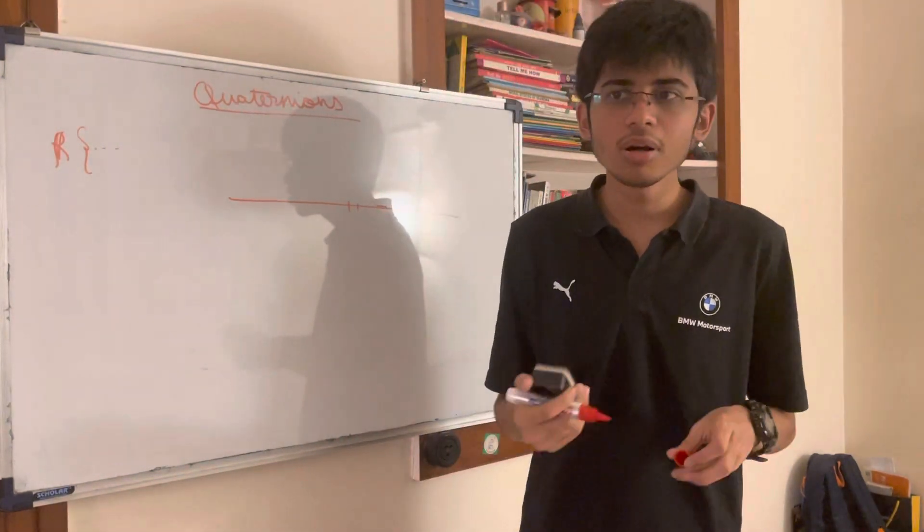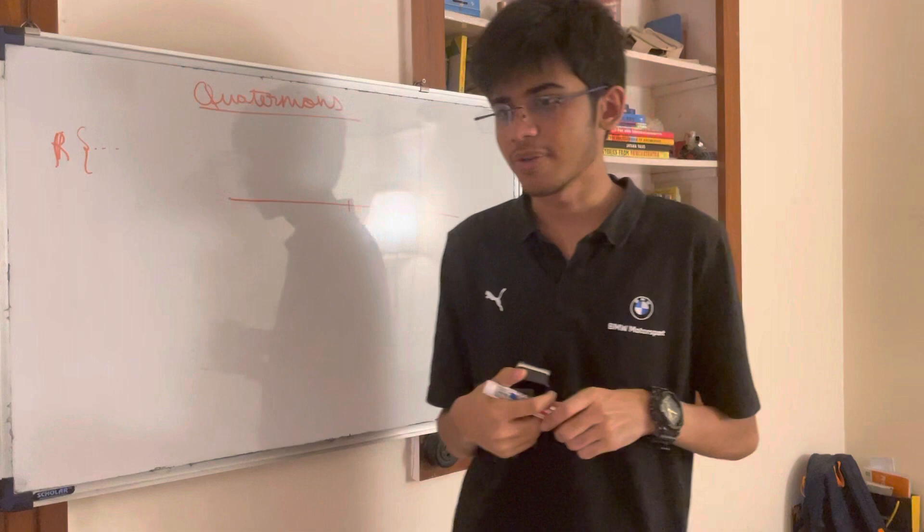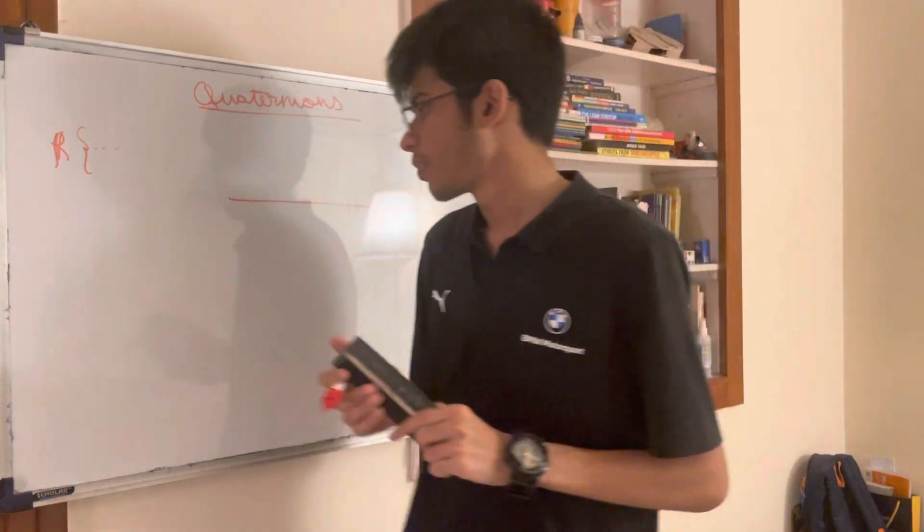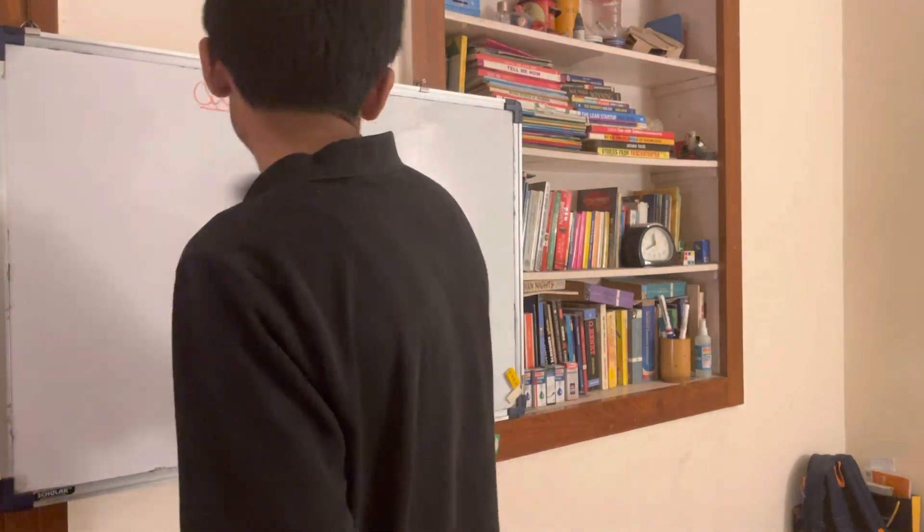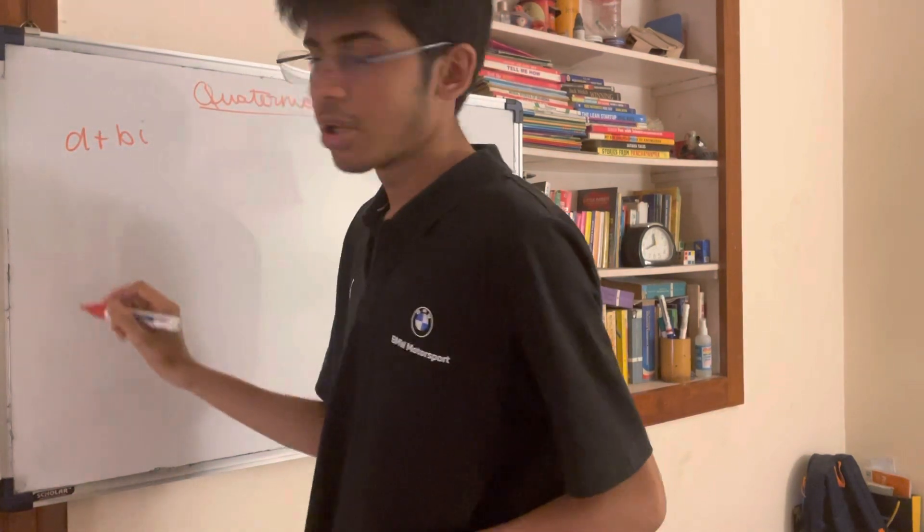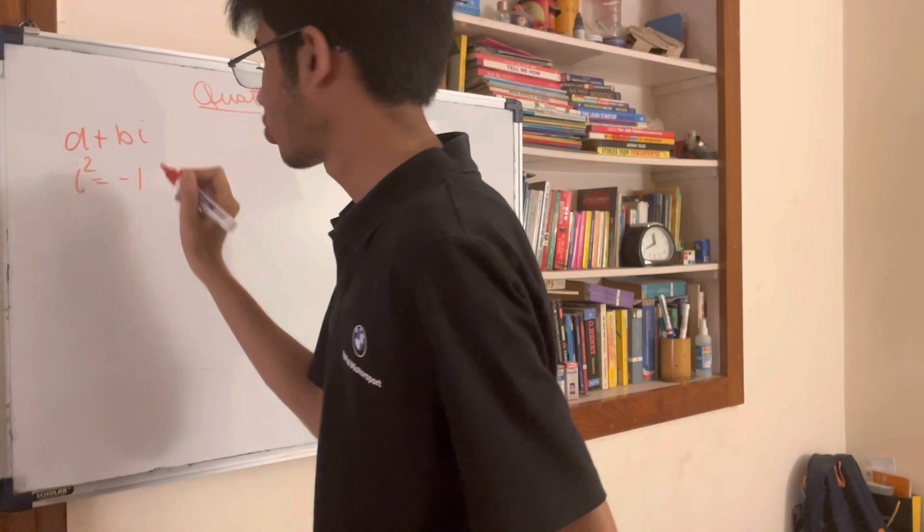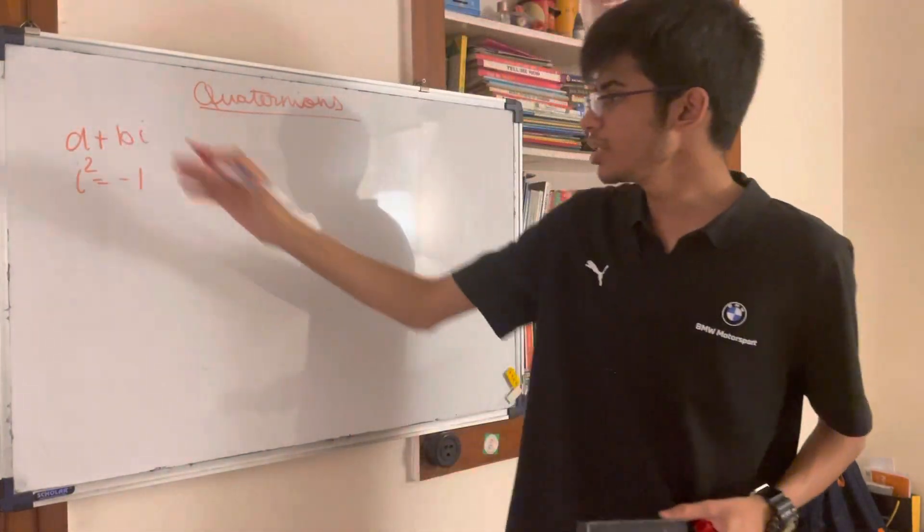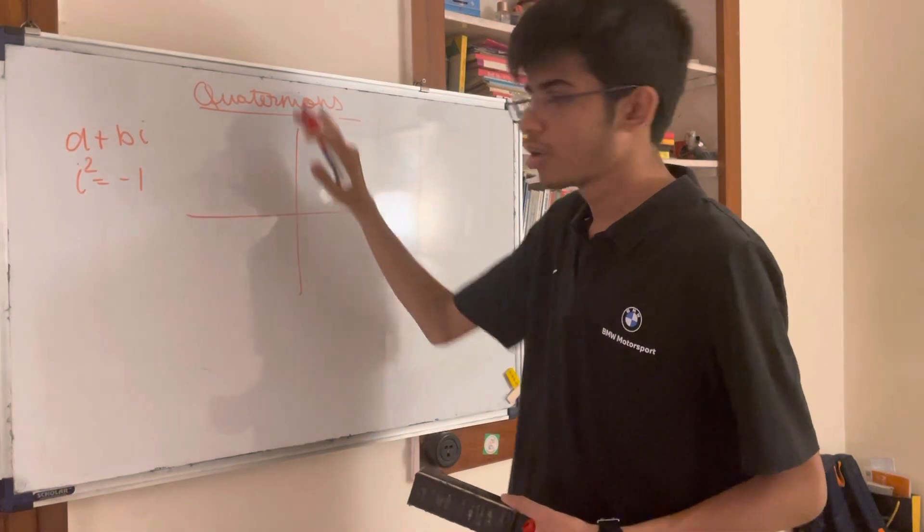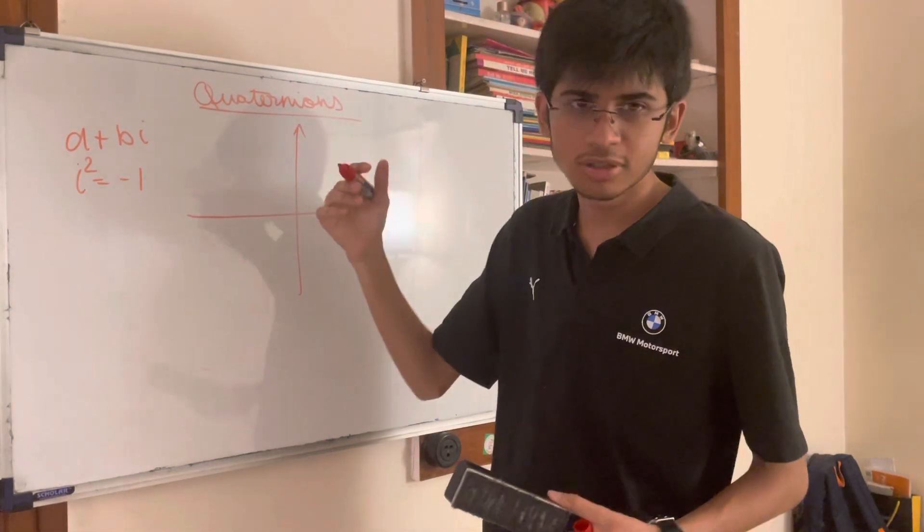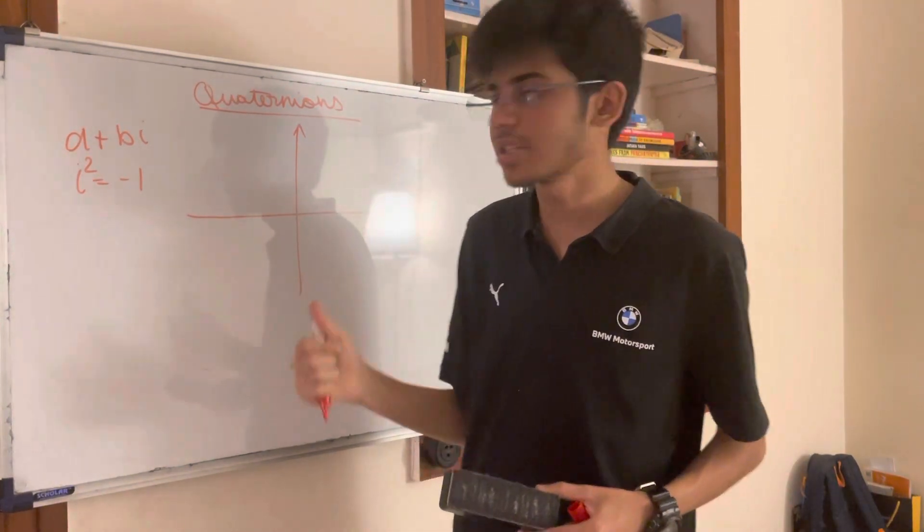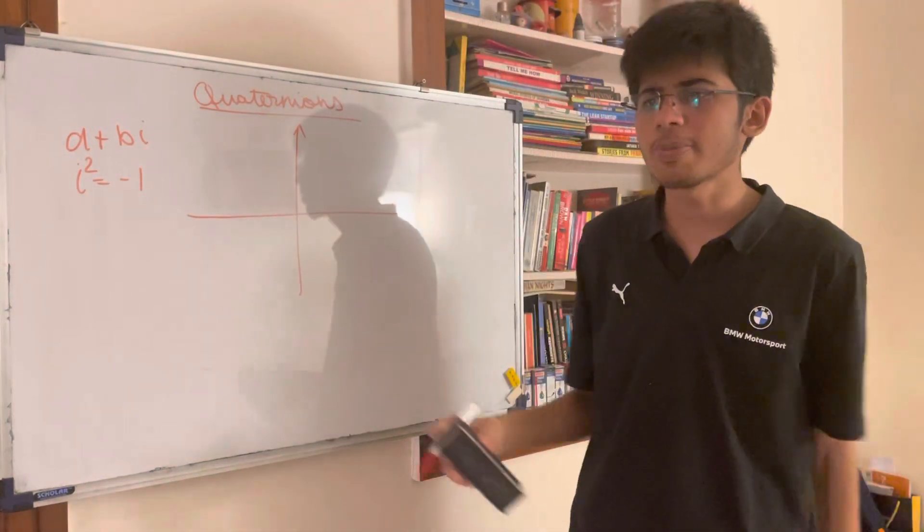People in the sciences would know numbers called complex numbers. What are complex numbers? Complex numbers are numbers of the form a plus bi, where i squared equals minus 1. These numbers are two-dimensional because you can represent them on a plane, where you have the y-axis corresponding to the complex axis and this being the real axis. So you get something called the Argand plane. These are complex numbers.